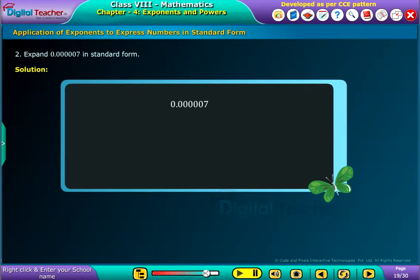Here, in the given number, we can say that there are 6 digits after the decimal point. Since this number is very small, to express this number in standard form,